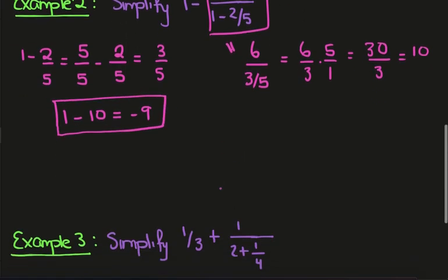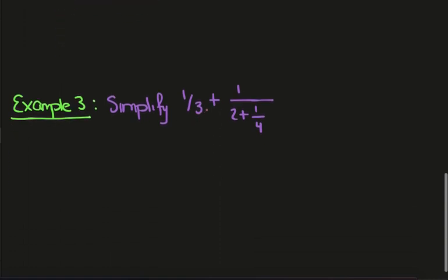Okay, for the last example here, let's consider 1 third plus 1 on 2 plus 1 quarter. Again, we'll look at this denominator first. So we have 2 plus 1 on 4. This will have a common denominator of 4.